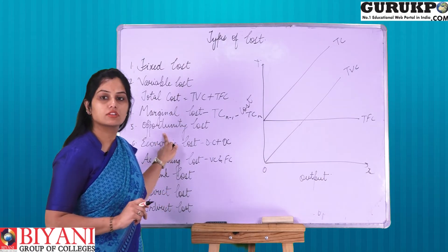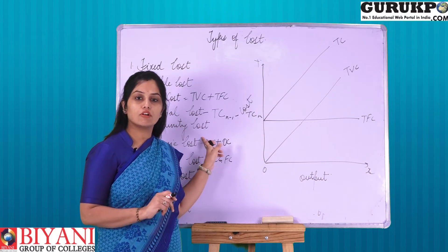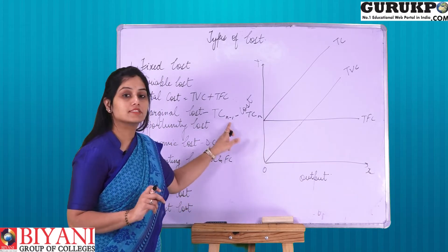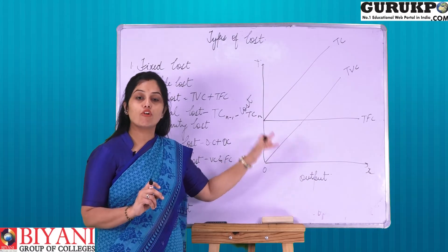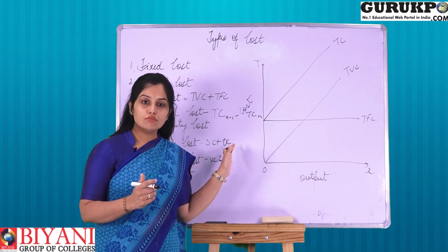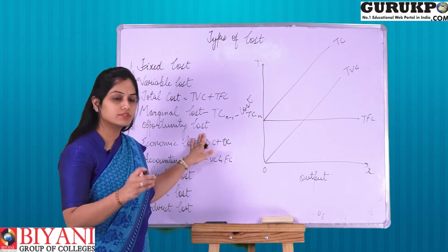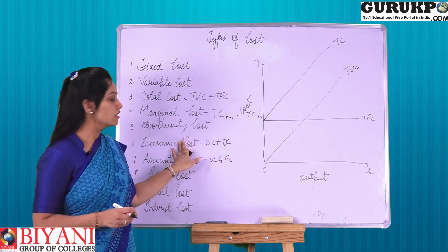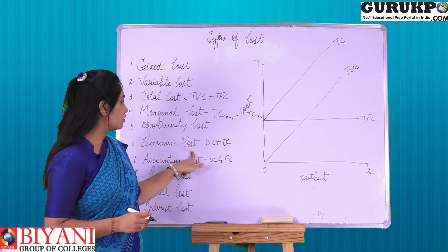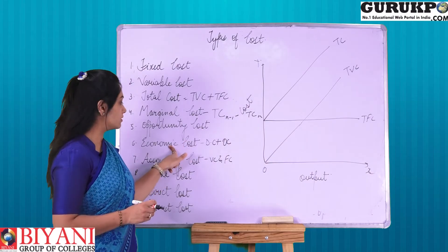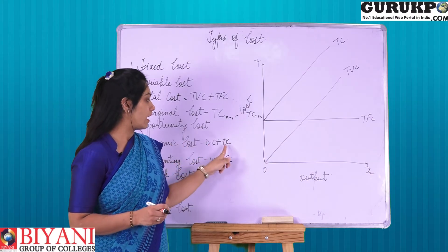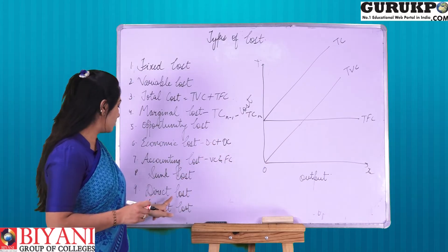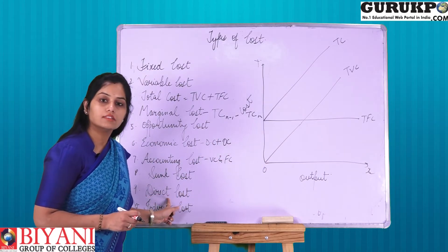Next is opportunity cost. What do you mean by opportunity cost? Opportunity cost means the next best alternative which I have forgone in order to choose the existing one — that is the opportunity cost. Next is economic cost. Economic cost is equal to direct cost plus opportunity cost.